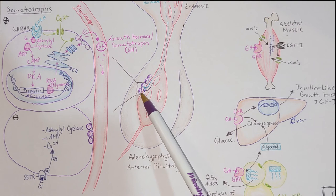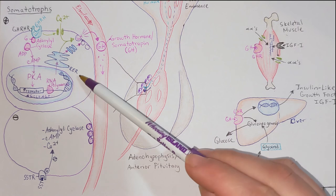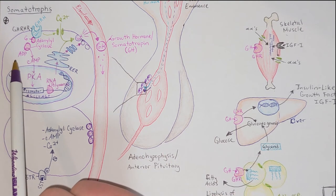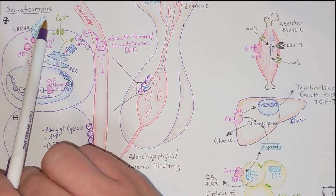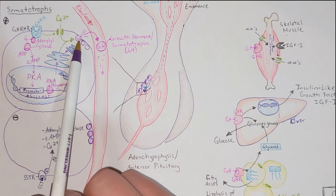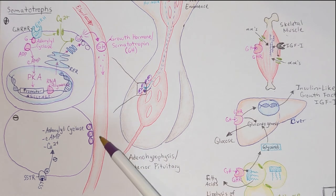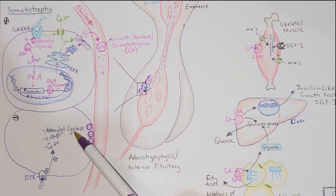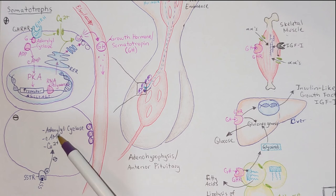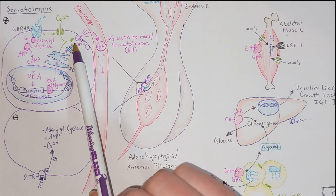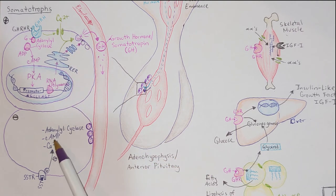Somatostatin is going to bind to the same cells — the somatotrophs — that growth hormone releasing hormone bound to. These cells can be stimulated to release growth hormone (positive stimulus) or inhibited. The inhibitory process involves somatostatin binding to somatostatin receptors, inducing a cyclic AMP mechanism: the G protein activates adenylyl cyclase, makes cyclic AMP, and in this case cyclic AMP closes calcium channels. Less calcium inhibits the release of growth hormone into the blood.